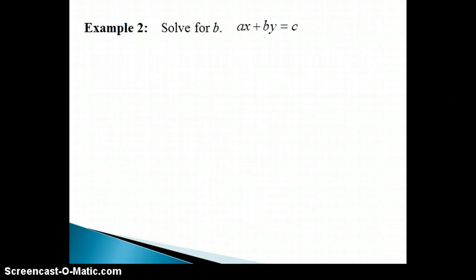Let's look at another one. The instructions for this example say to solve for B. So B is going to be our variable of interest for this problem, and we need to work on isolating B on one side of the equation.